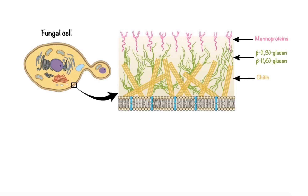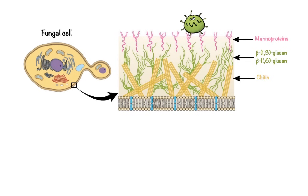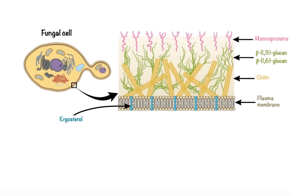Being external, the cell wall offers mechanical strength and acts as a barrier, thus protecting the fungus from the hostile environment. Underneath this wall lies the plasma membrane made up of a phospholipid bilayer. The major sterol found in fungal plasma membranes, called ergosterol, acts to maintain membrane integrity in the same capacity as cholesterol, which is the major sterol found in mammalian cell membranes.